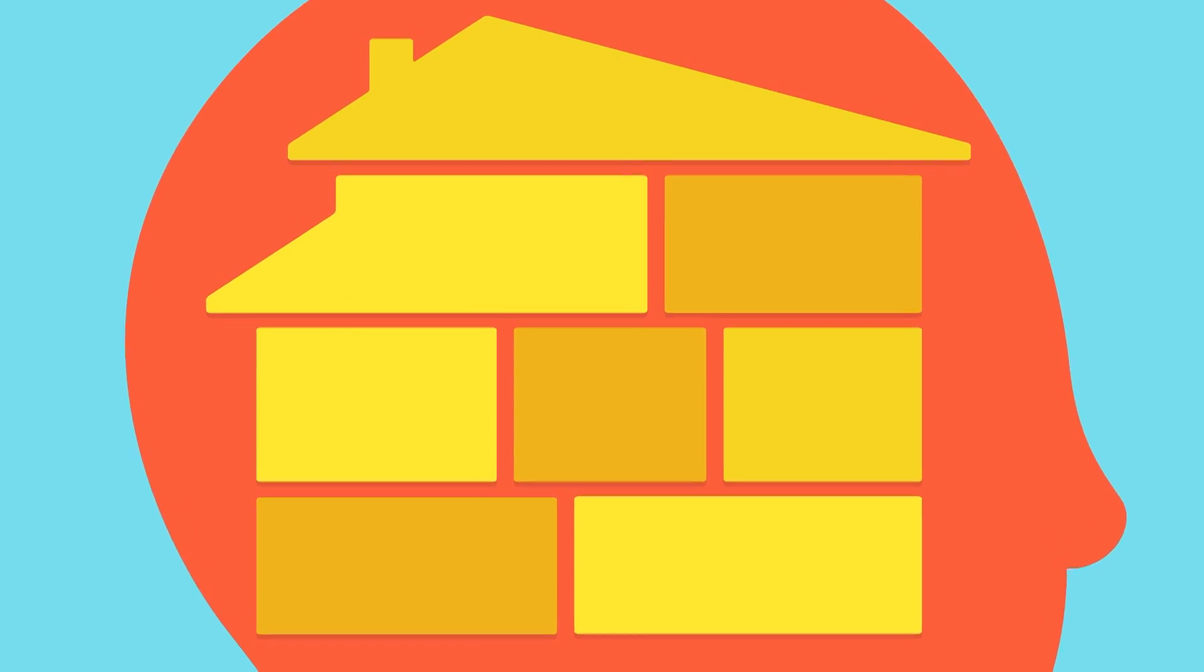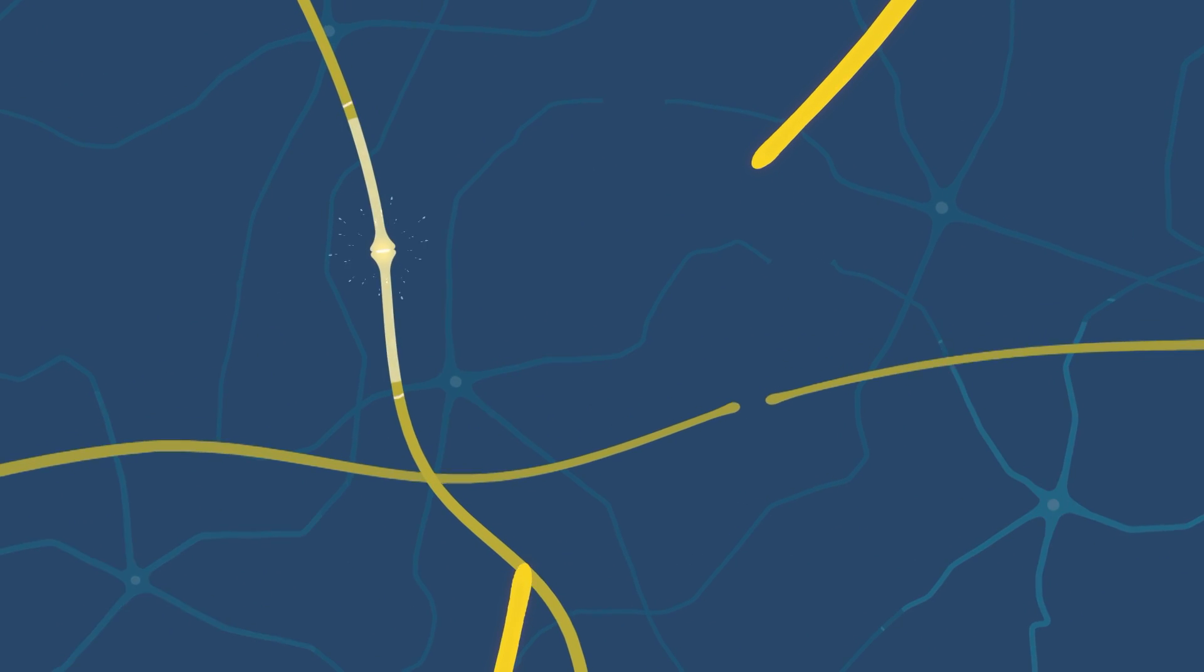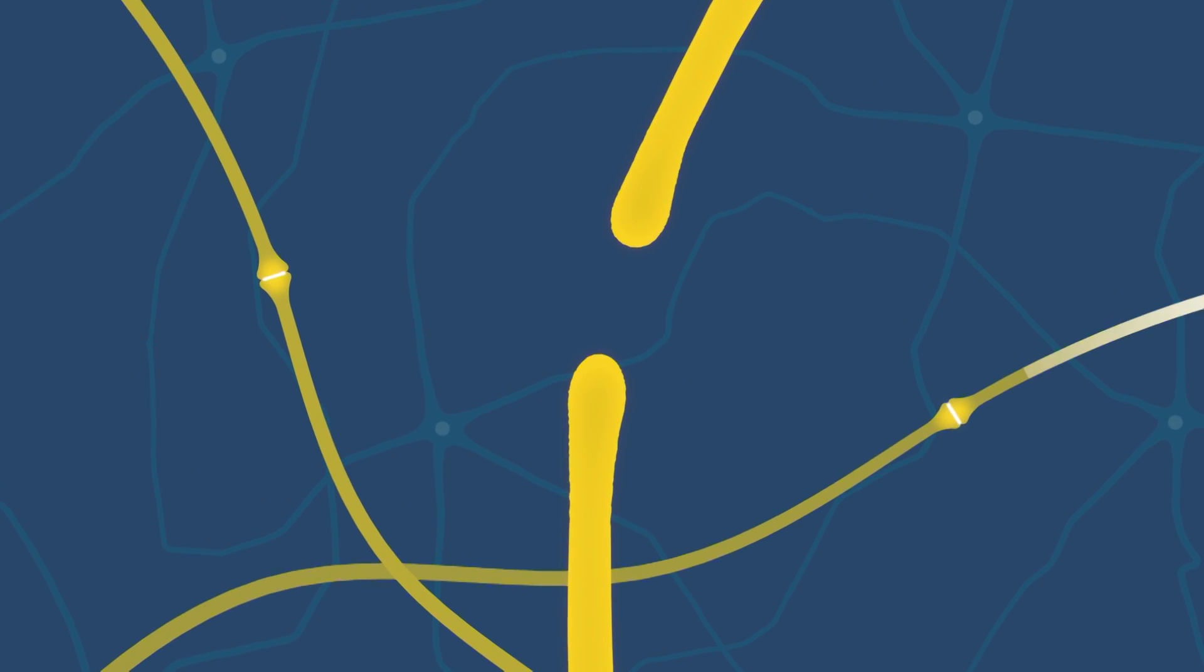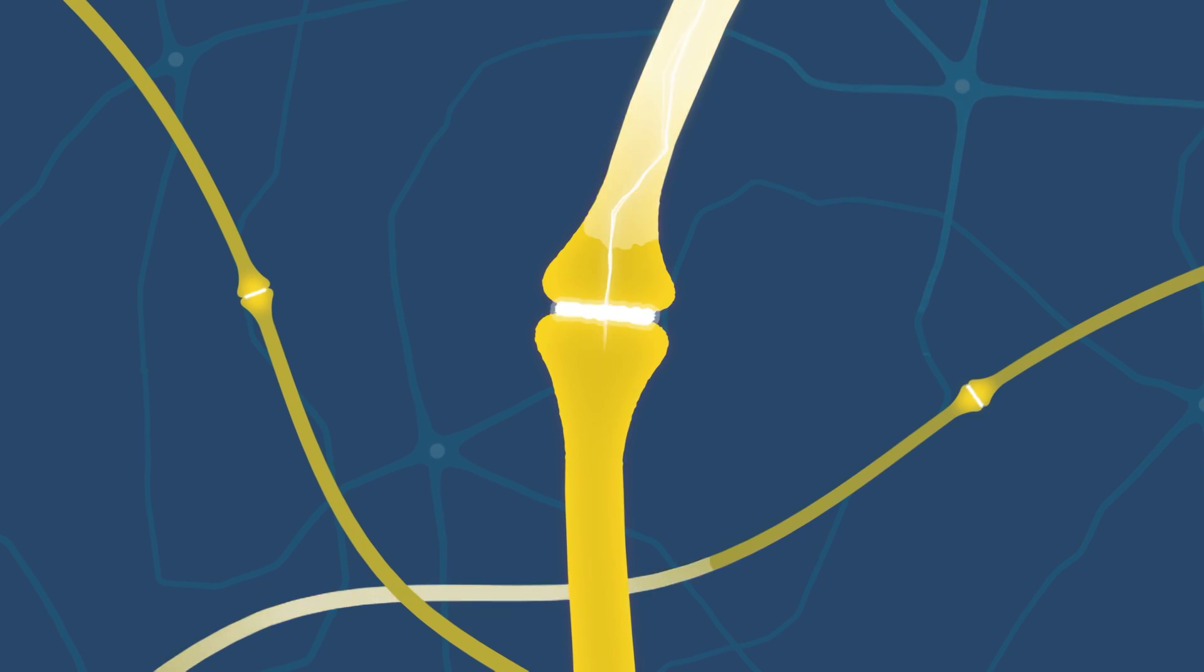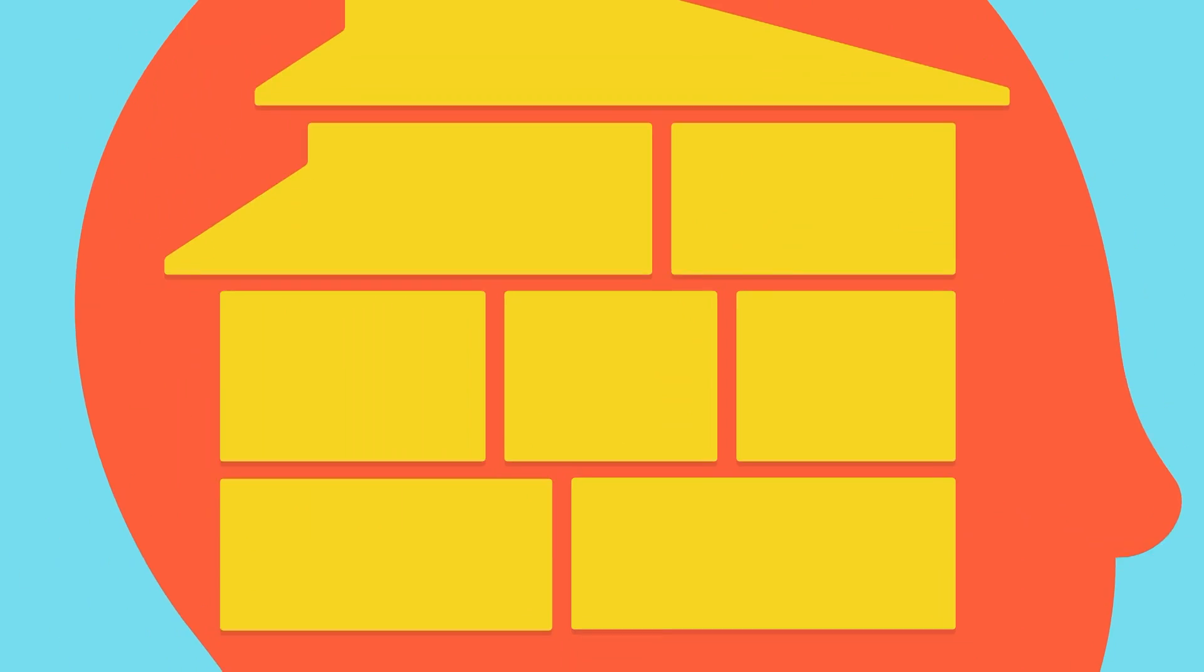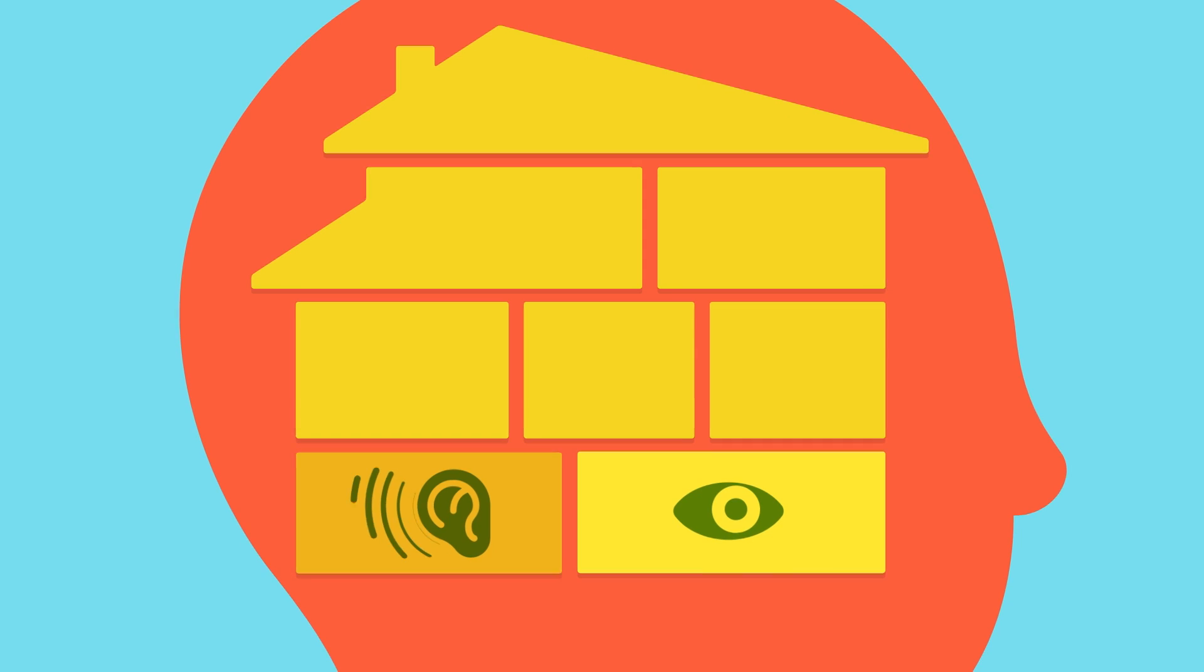Brain cells are the building material. What happens is that experiences you have cause brain cells to connect together, like a house that's getting wired up. Basic sensory abilities, like vision and hearing, are the first to get wired up.